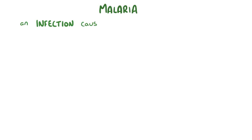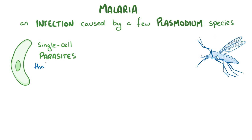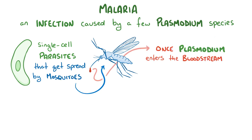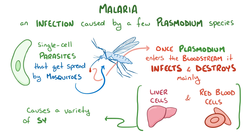Malaria is an infection that can be caused by a few different types of plasmodium species, which are single-celled parasites that get spread around by mosquitoes. Once the plasmodium gets into the bloodstream, it starts to infect and destroy mainly liver cells and red blood cells, which causes a variety of symptoms and sometimes even death.